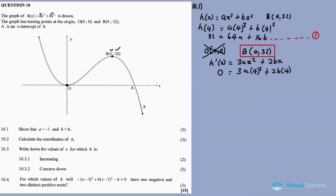Substituting into the first derivative: zero equals 3a times 4 squared plus 2b times 4. Four squared is 16, and 16 times 3 is 48, giving 48a. Then 4 times 2 is 8, giving 8b. So equation number two is: zero equals 48a plus 8b.